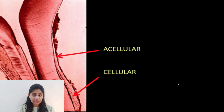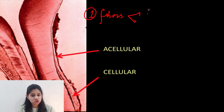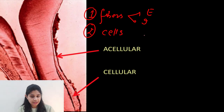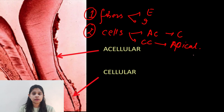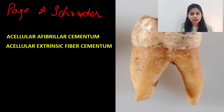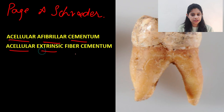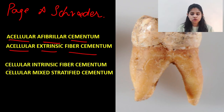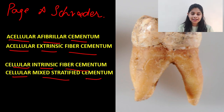So we have spoken about two important aspects: first, the fibers — which can be either the extrinsic group or the intrinsic group — and second, the cells, where the presence of cementocytes determines whether we have acellular or cellular cementum. Based upon these two components and the histologic features, it was Page and Schroeder who gave a detailed classification of cementum into four major classes: acellular afibrillar cementum, acellular extrinsic fiber cementum, cellular intrinsic fiber cementum, and cellular mixed stratified cementum.